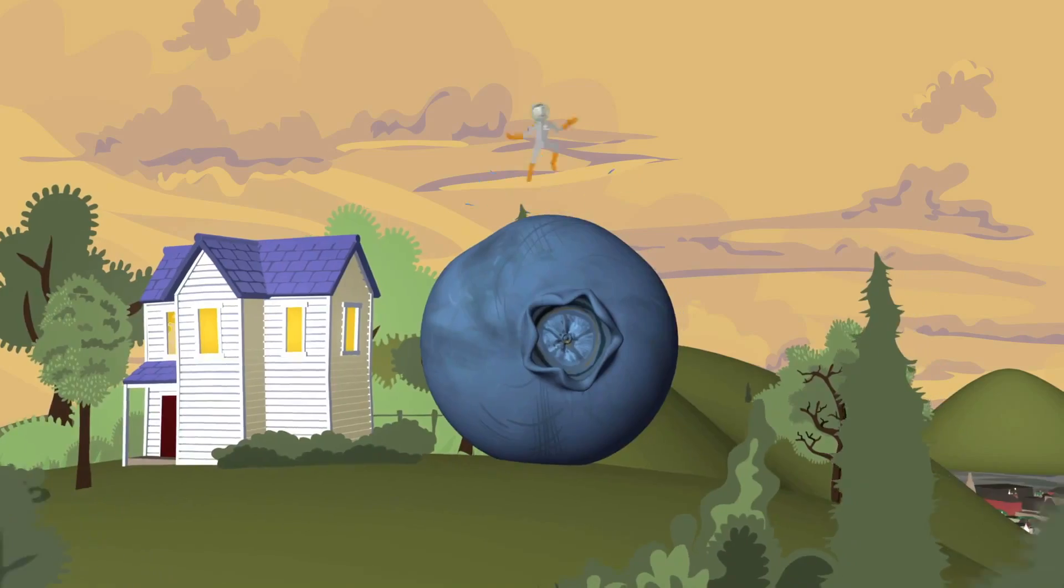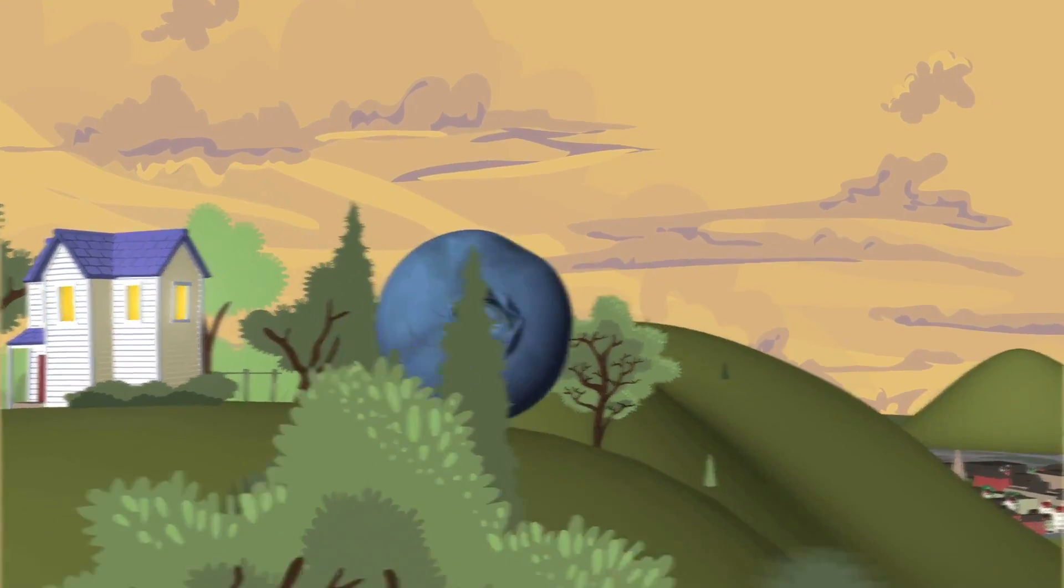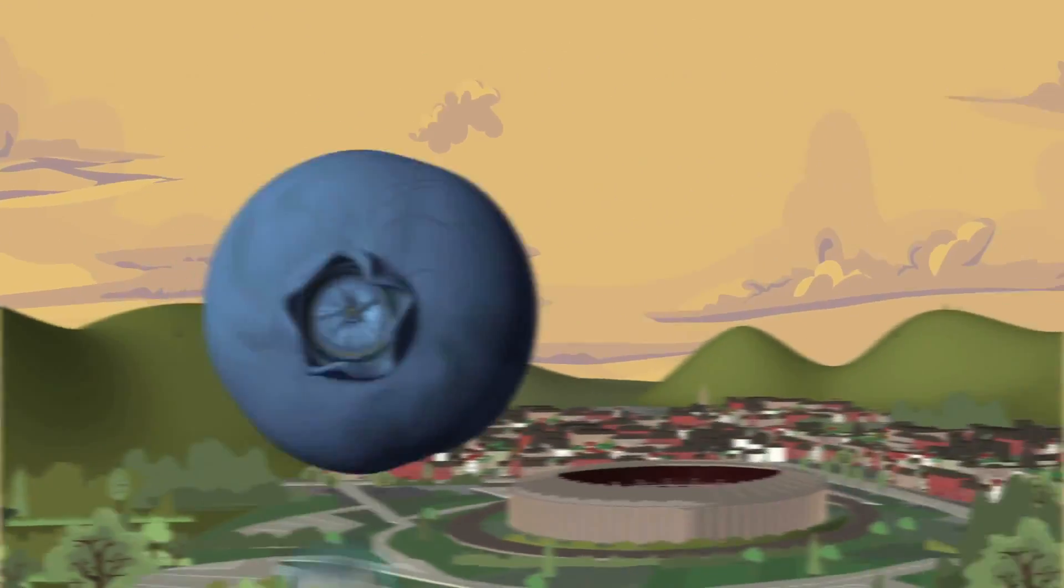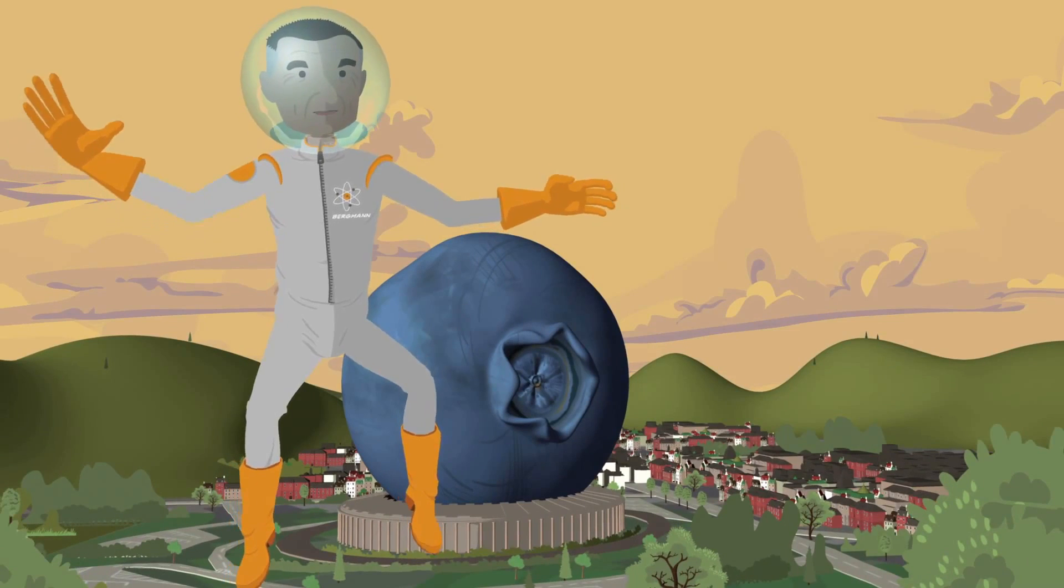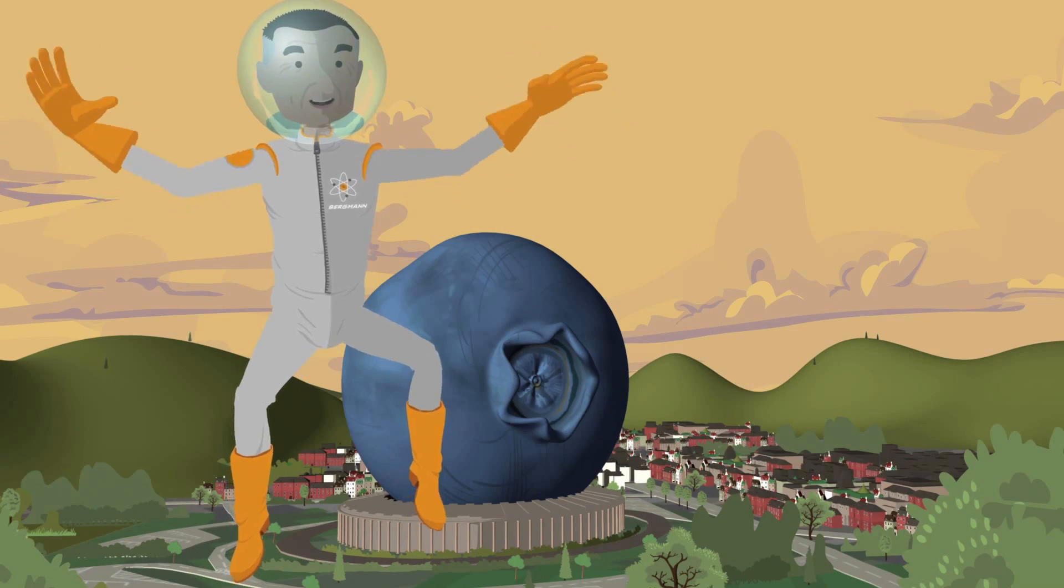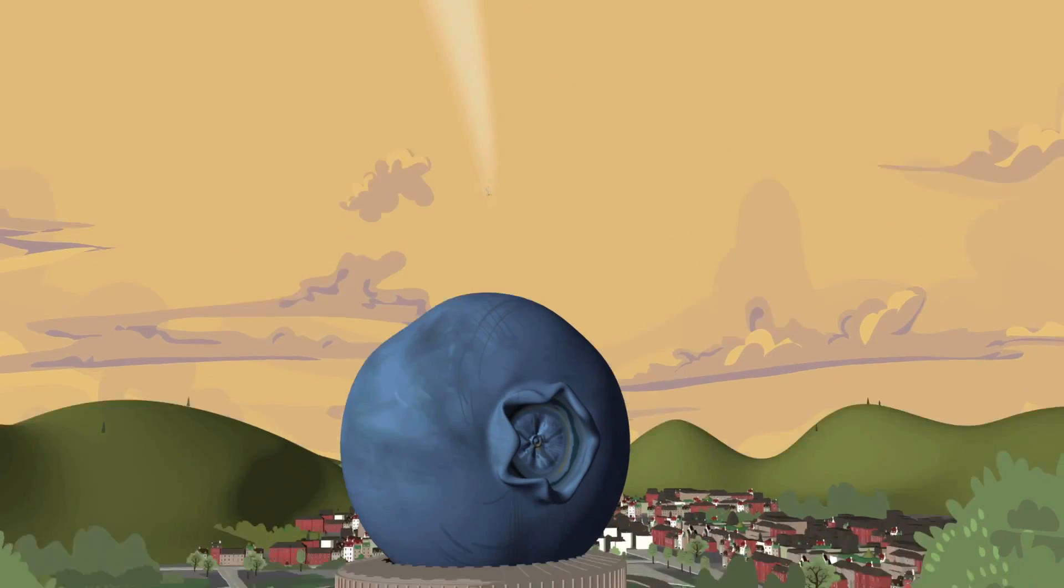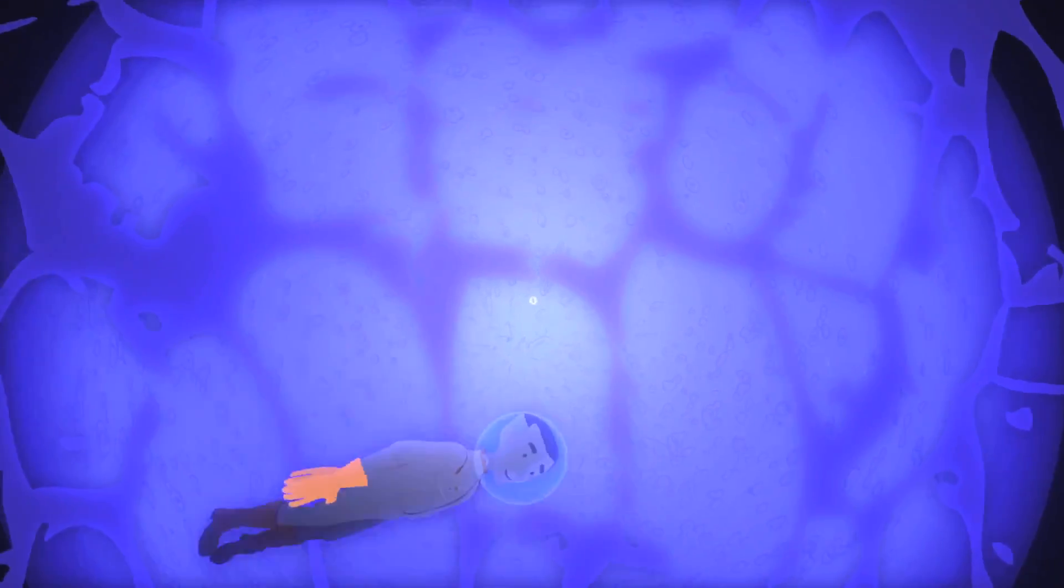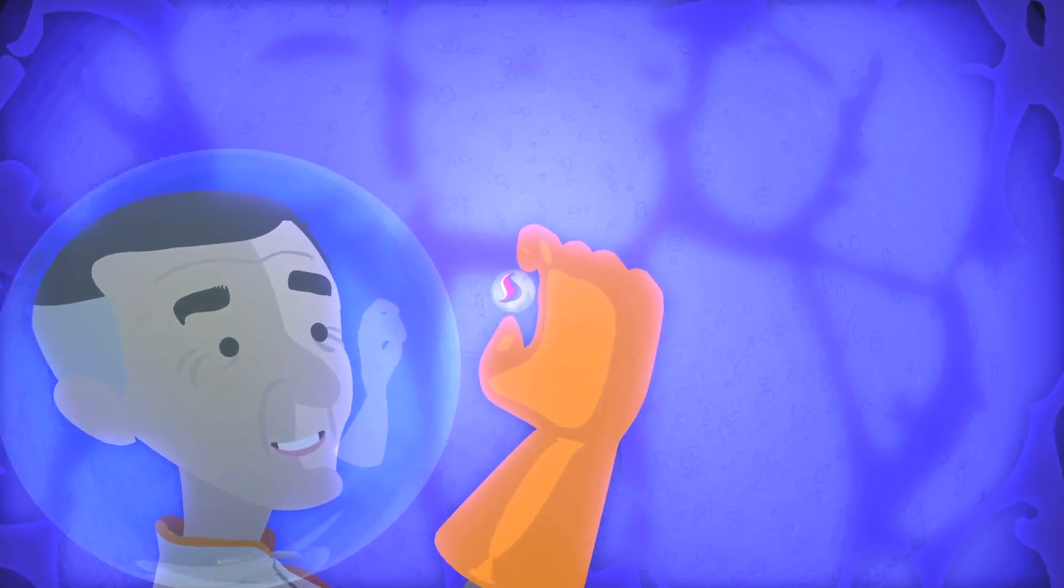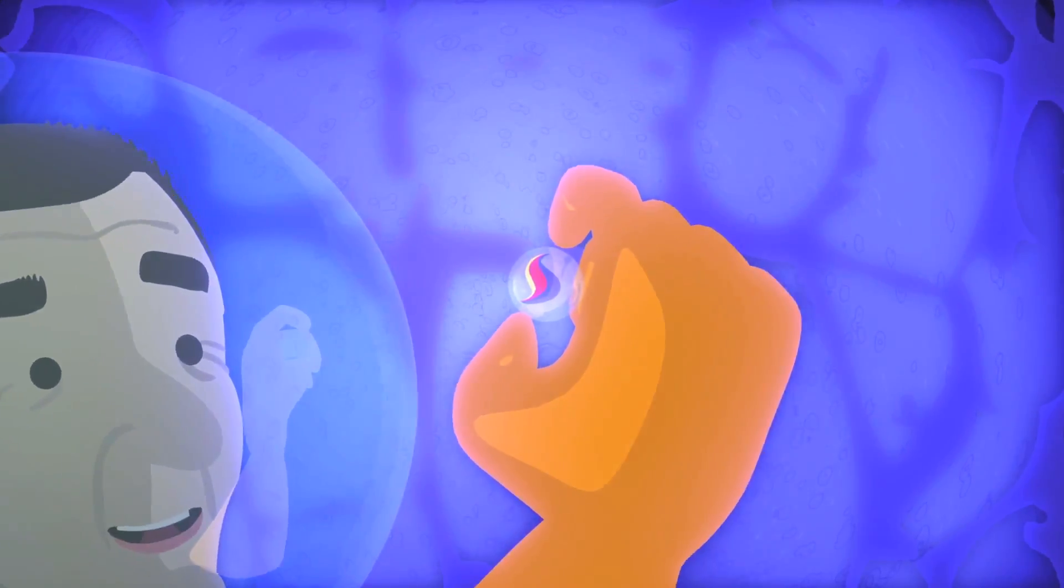So to get our minds wrapped around how big the nucleus is, we need to blow up the blueberry up to the size of a football stadium. So imagine a ball the size of a football stadium. And right smack dab in the center of the atom, you would find the nucleus. And you could see it. And it would be the size of a small marble.